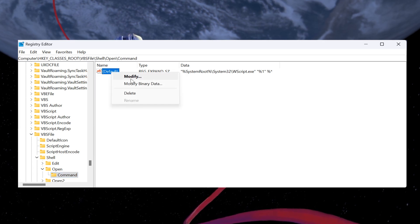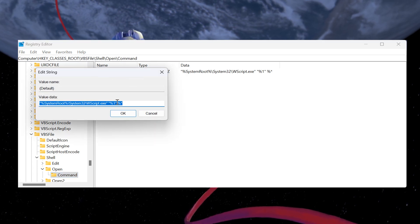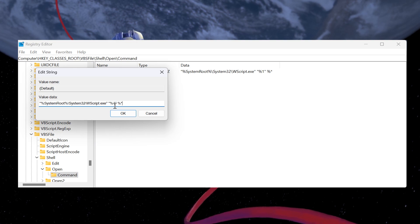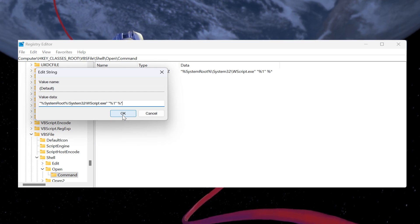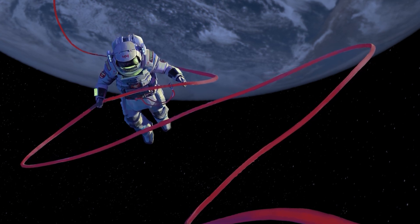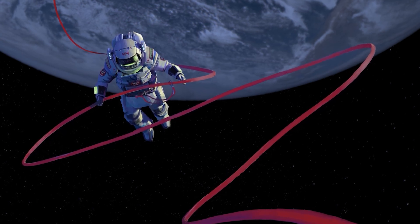In the right pane, double-click the default key. Ensure the value data is set to %SystemRoot% %32 Wscript.exe. You can copy this text from the description below. If it's different, modify it accordingly. Click OK, close the Registry Editor and restart your computer to check if the error has been resolved.